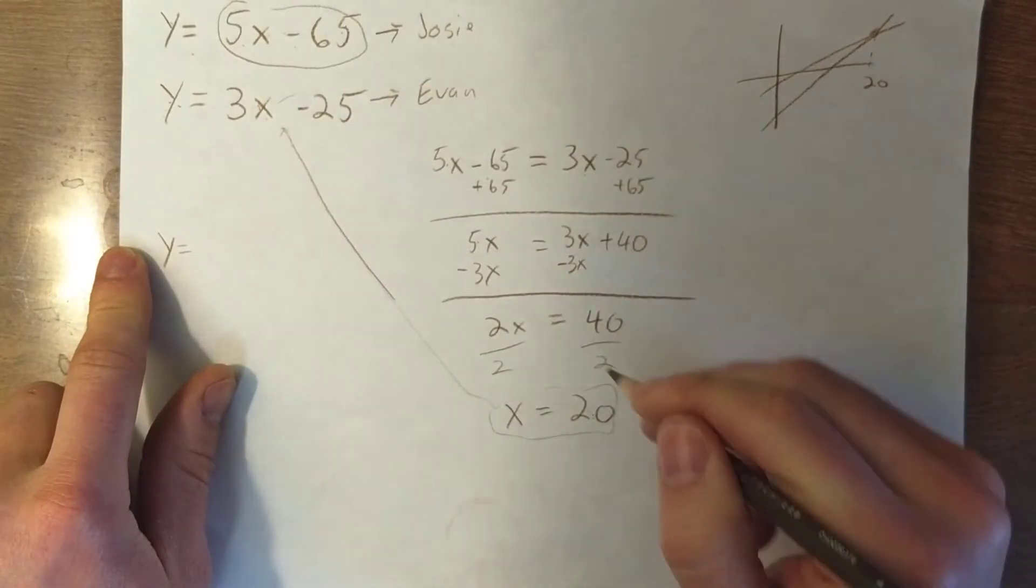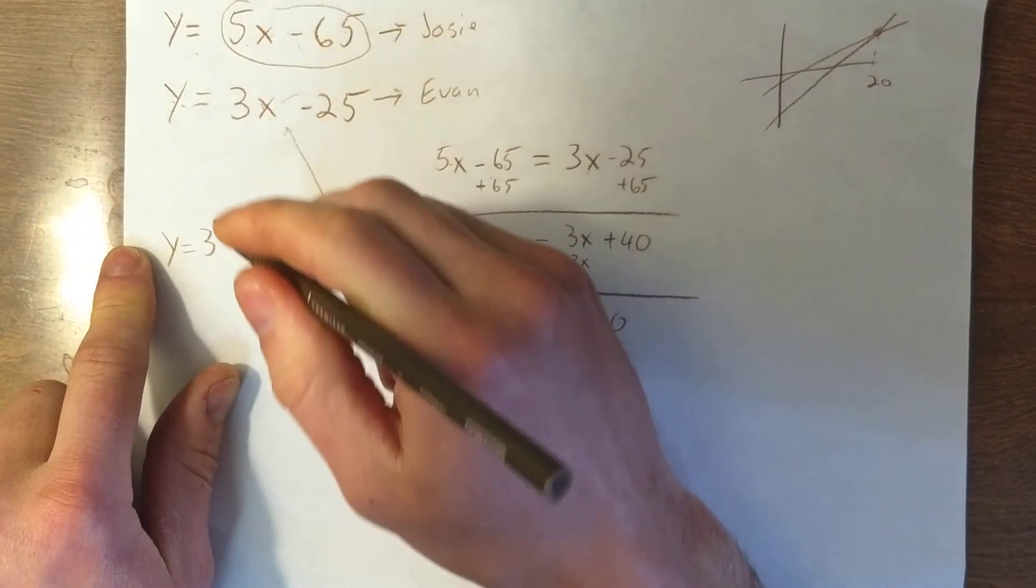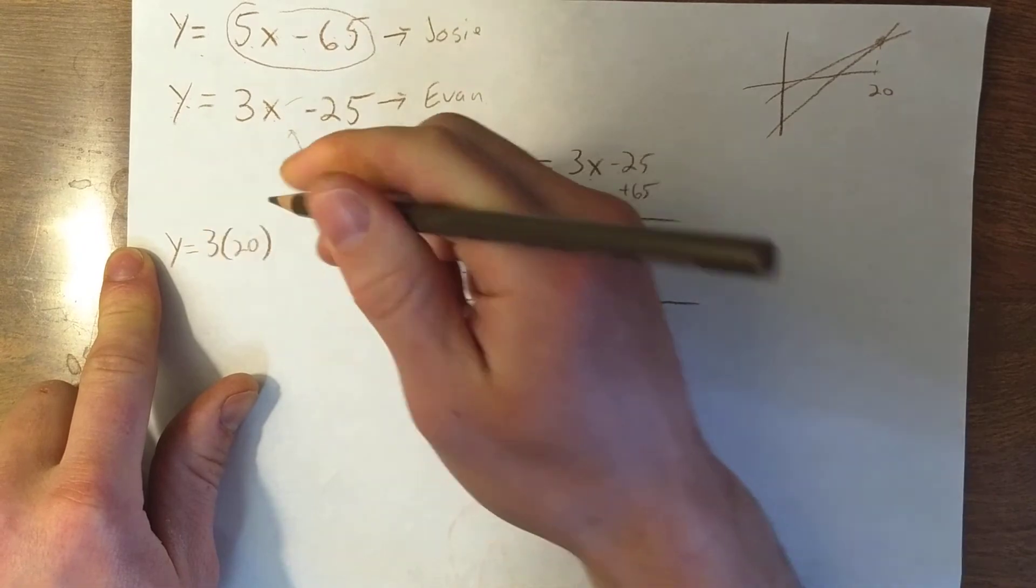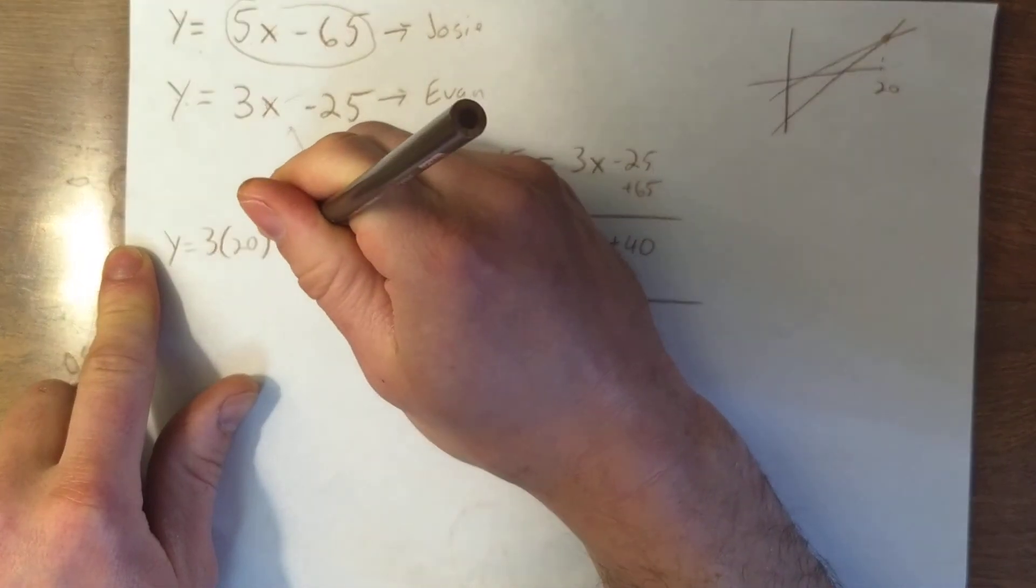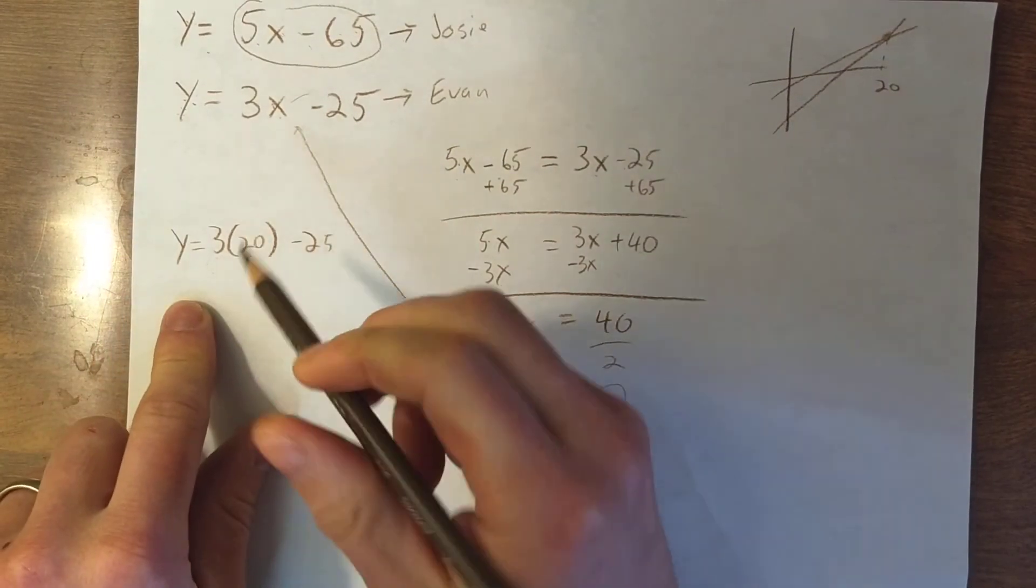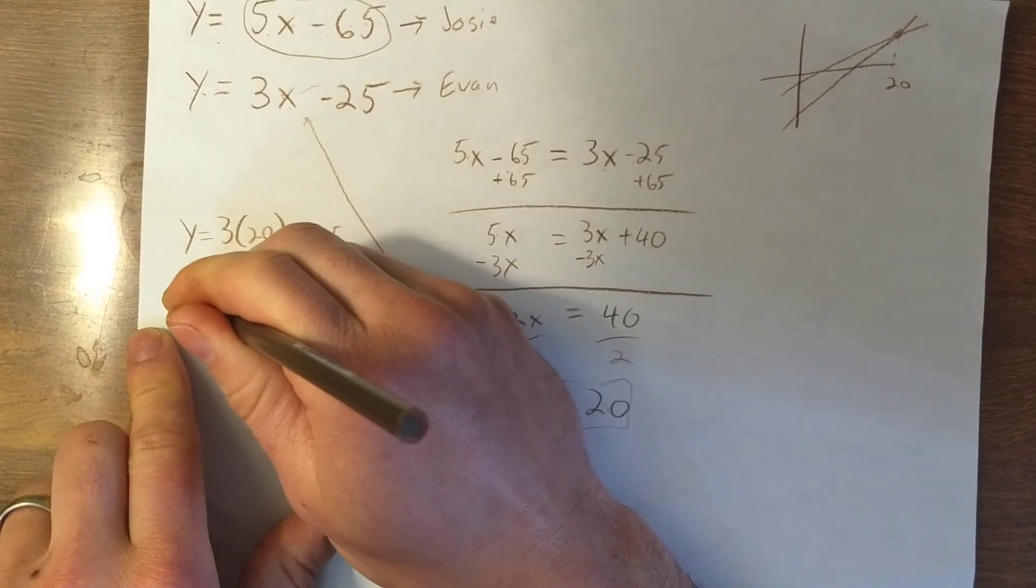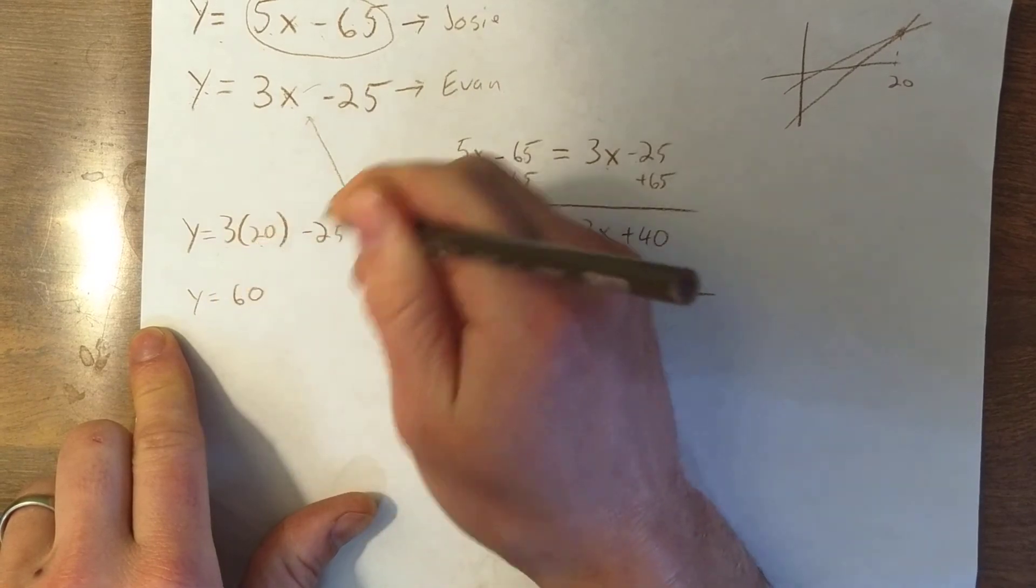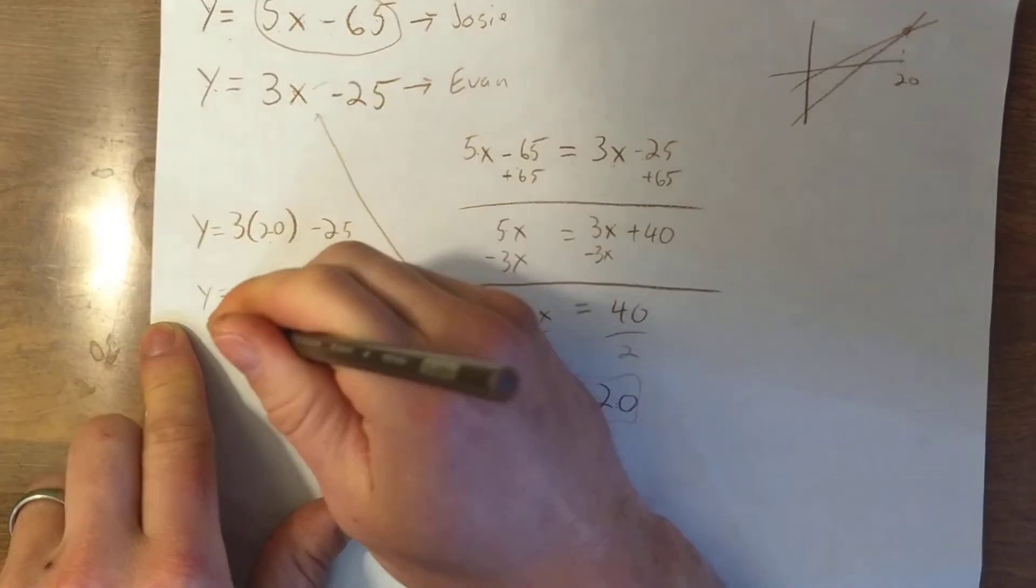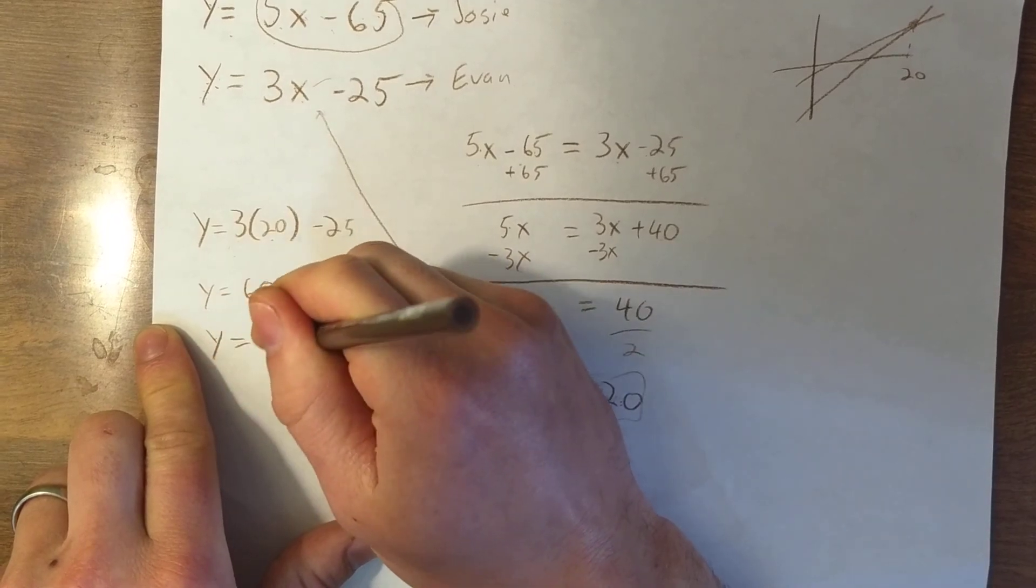So y equals, remember, it doesn't matter which equation you choose. 3 times 20, because that's the number of fruit I know that we have to sell, minus 25. 3 times 20 is 60. So y equals 60 minus 25. Well, 60 minus 25 is 35. So y equals 35.